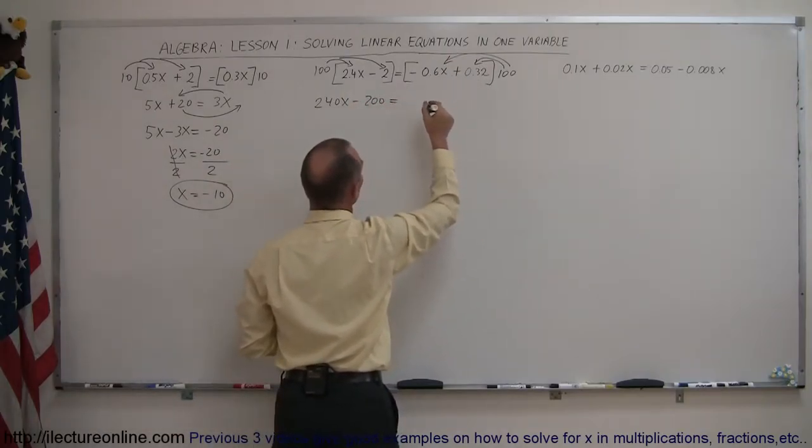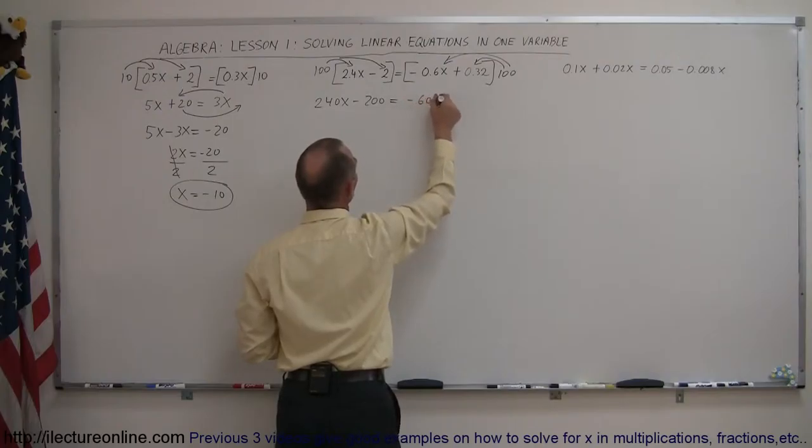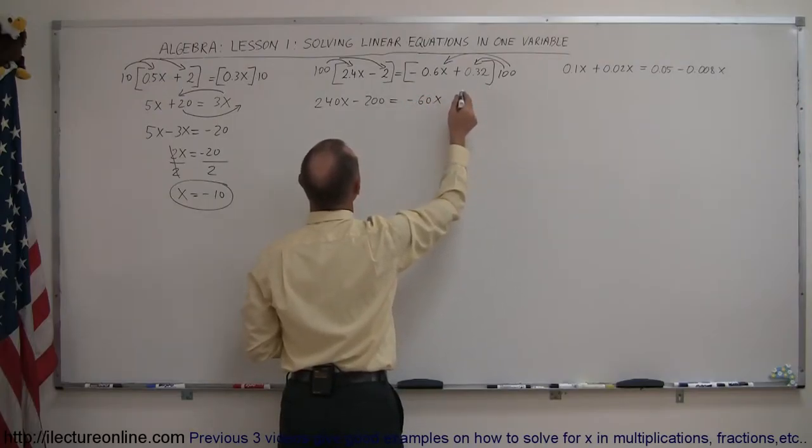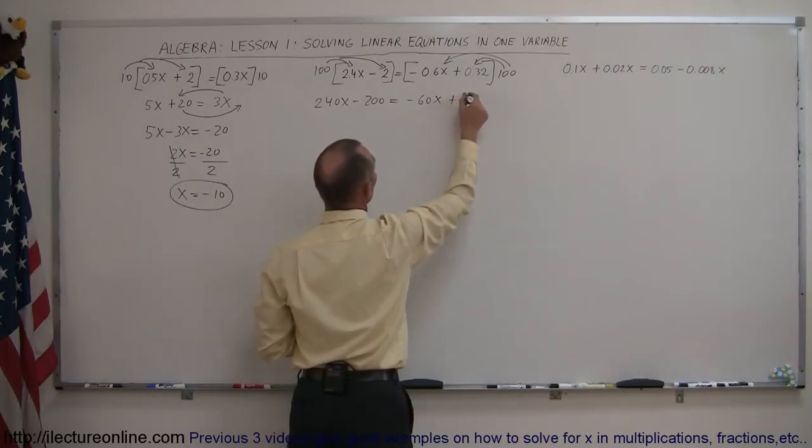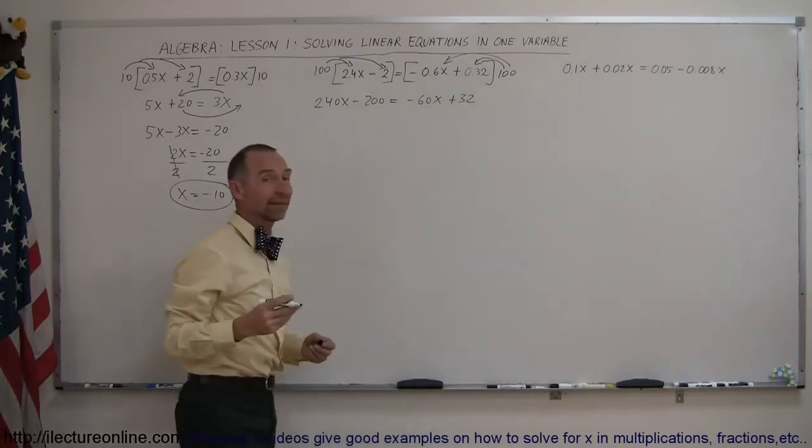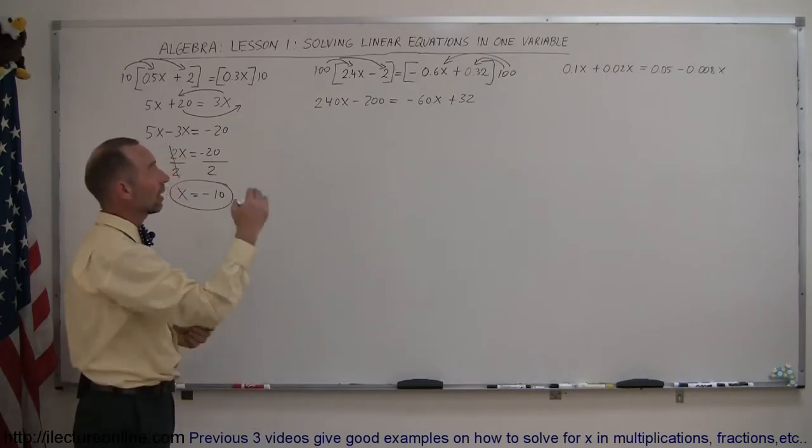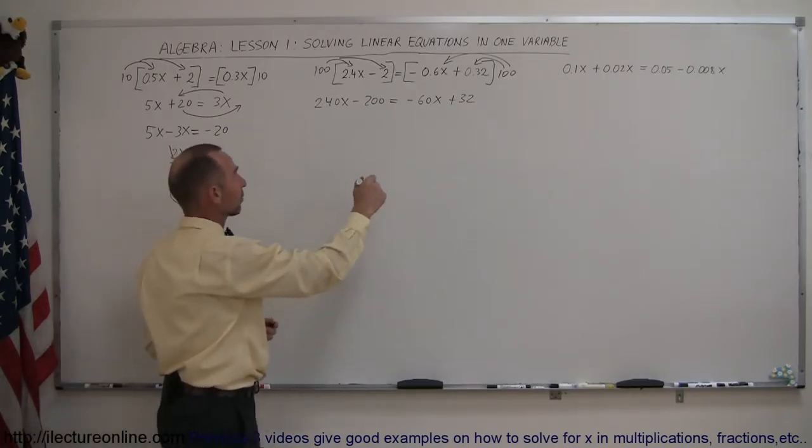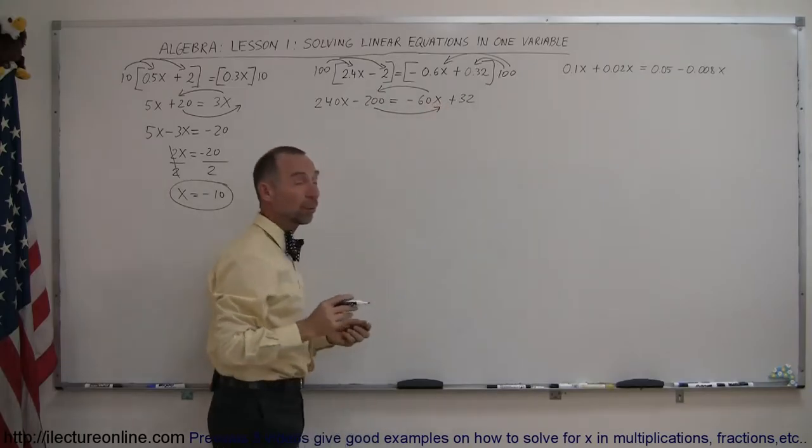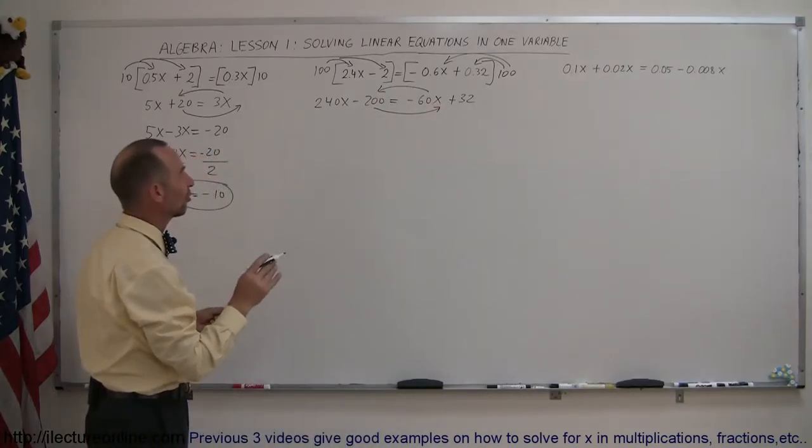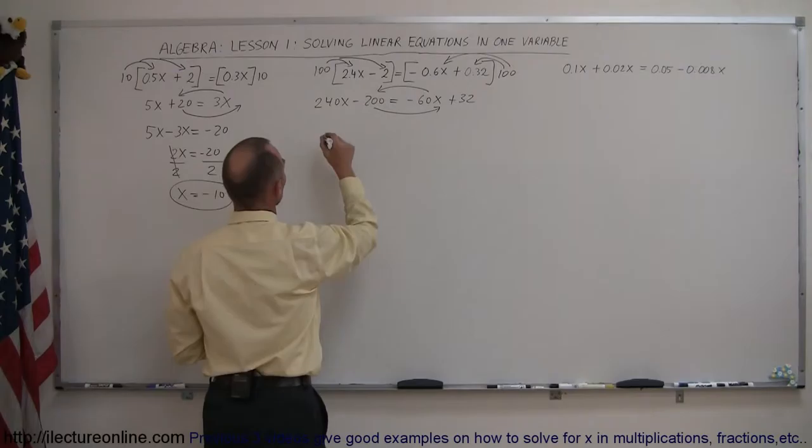So when we distribute that over those two terms, distribute this over these two terms, what do we get? So 100 times 2.4x is 240x. 100 times minus 2 is minus 200, equals 100 times negative 0.6x is minus 60x, and 100 times 0.32 is plus 32.